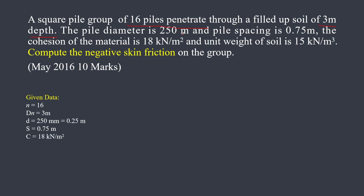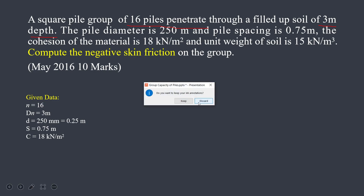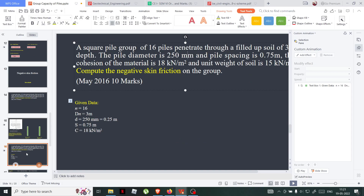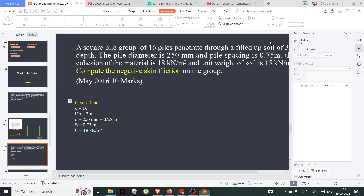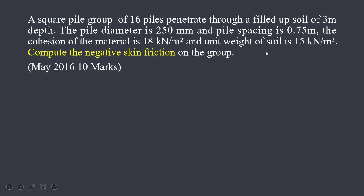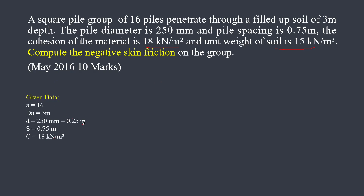The pile diameter is 250 mm. The pile spacing is 0.75 meters. The cohesion of the material C is given as 18 kN. Note: if C is not given, you may be given the unconfined compression strength q_u — just divide q_u by 2 to get C. The unit weight of soil gamma is 15 kN/m³. We are asked to compute the negative skin friction on the group. This is an exam numerical from Mumbai University 2016 worth 10 marks and is straightforward.